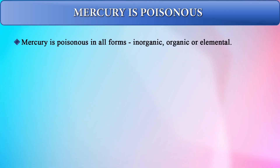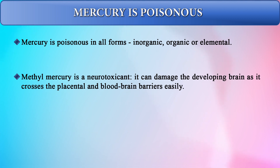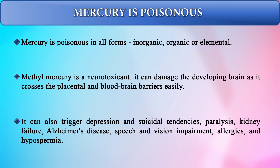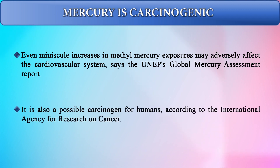Mercury is poisonous in all its forms — inorganic, organic, or elemental. Methylmercury is a neurotoxicant that damages the developing brain; it is a teratogen that can cross both the blood-brain barrier and the placental barrier, damaging the fetal brain. It can trigger depression, suicidal tendencies, paralysis, kidney failure, Alzheimer's disease, speech and vision impairment, allergies, and hypospermia. Mercury is carcinogenic — even minuscule increases in methylmercury exposure can adversely affect the cardiovascular system, as reported by the UNEP Global Mercury Assessment. It is also classified as a possible carcinogen by the International Agency for Research on Cancer.